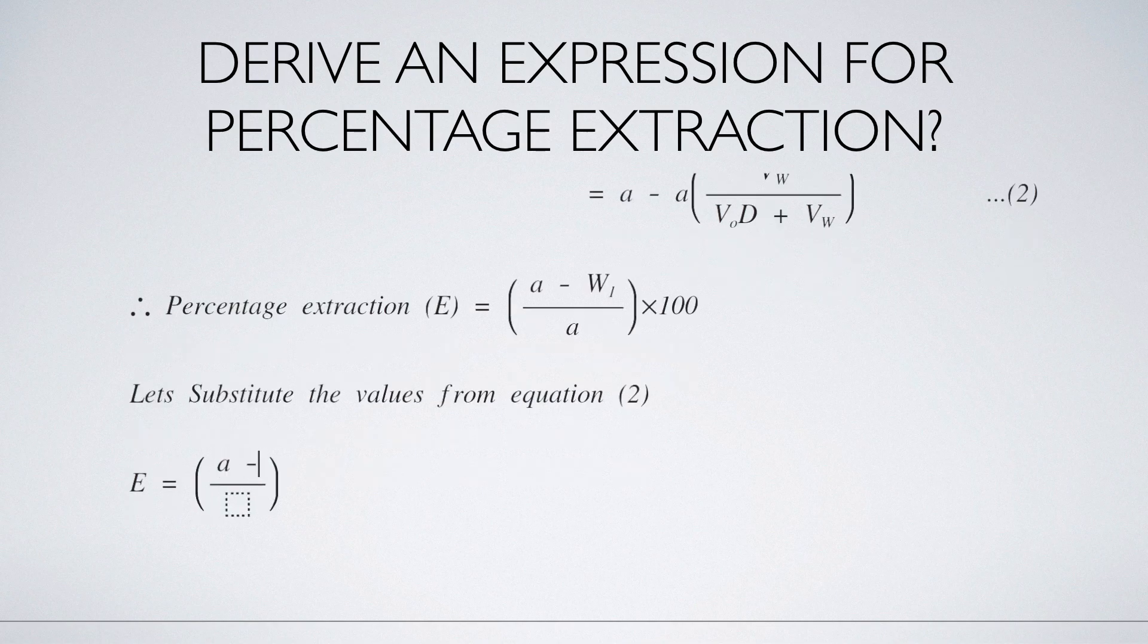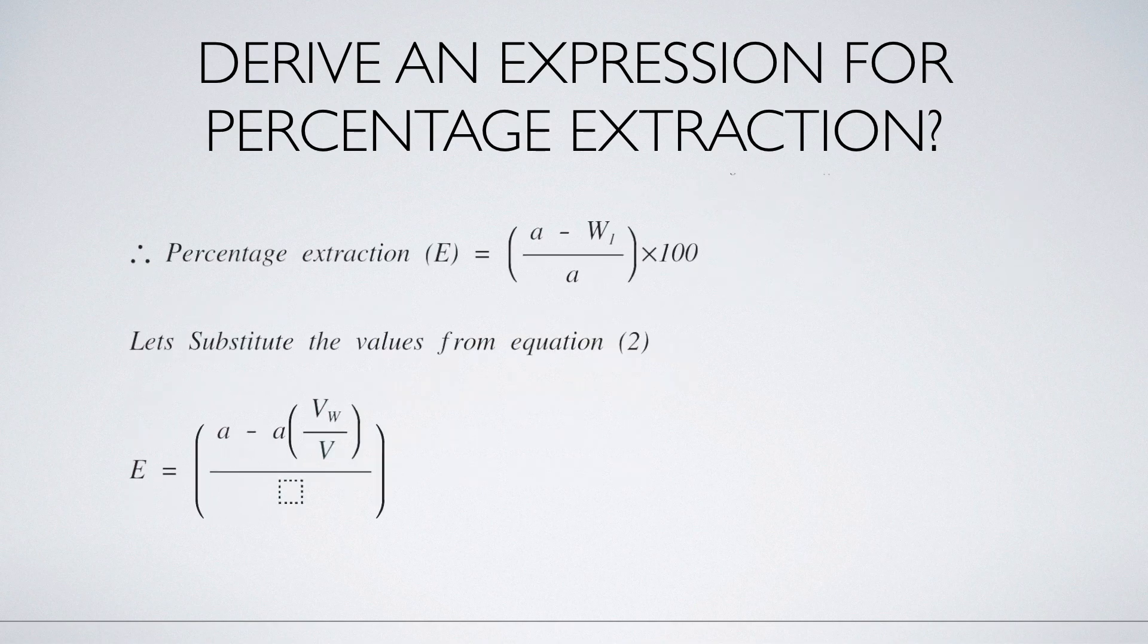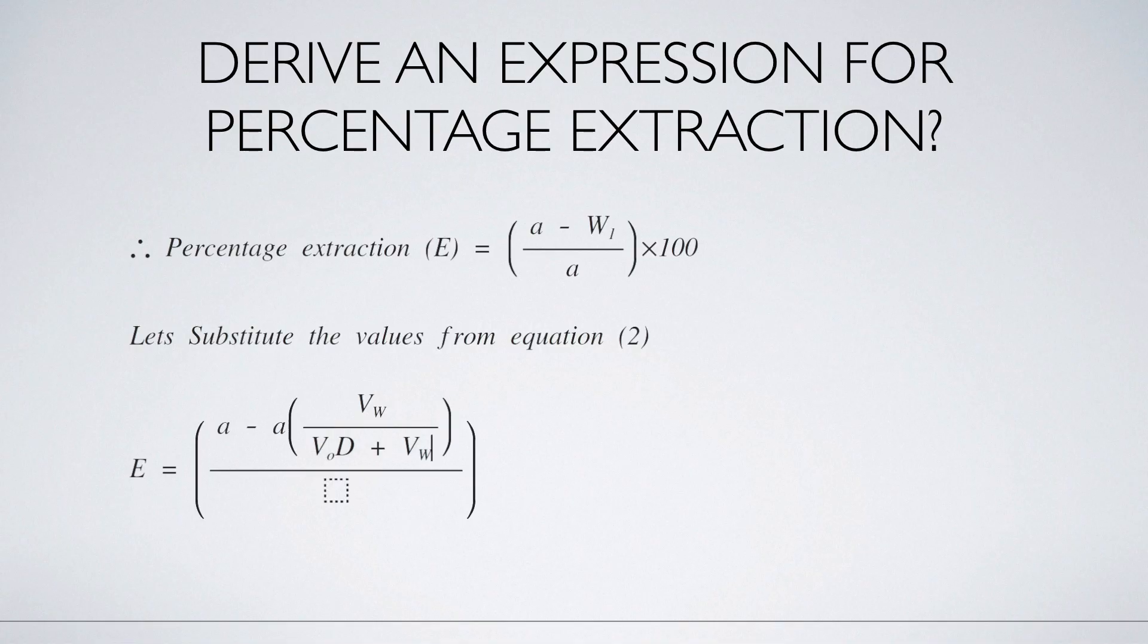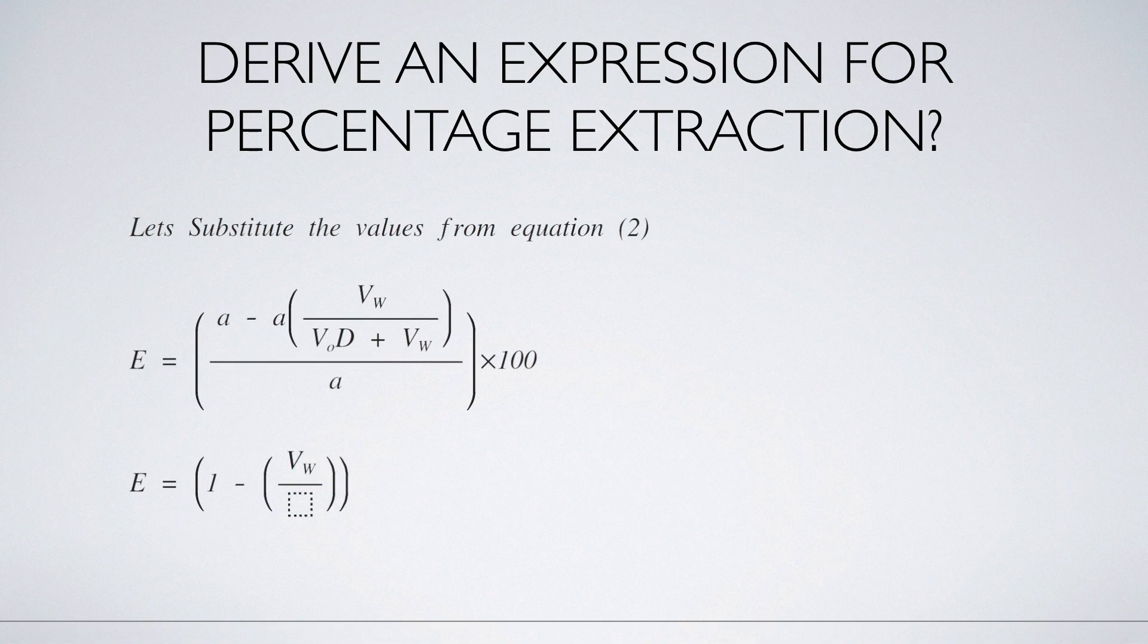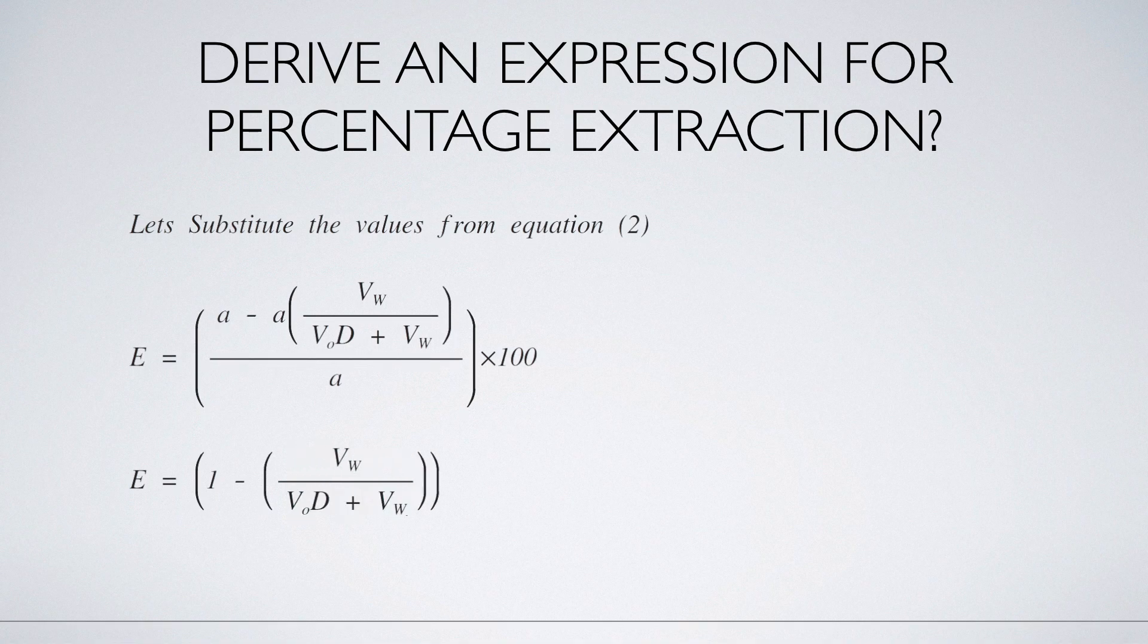E equals A minus A VW divided by VOD plus VW, divided by A, into 100. Let's divide everything by A. So it becomes 1 minus VW divided by VOD plus VW into 100.